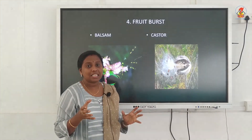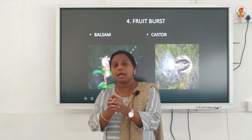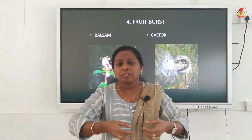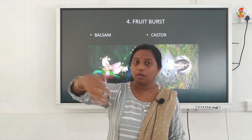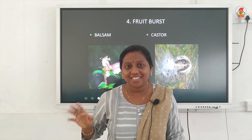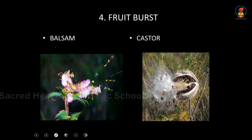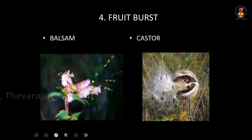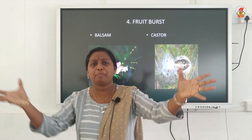The next type is fruit dispersal by a mechanism called bursting. The plant itself develops mechanisms for seed dispersal — when mature fruits burst, the pressure disperses seeds to different areas far from the parent plant. This fruit-bursting technique can be observed in plants like balsam — the seeds are dispersed when the fruit explodes, sending seeds far away. Similarly in castor, the fruit bursts and seeds go out, carried to new places by the explosion pressure.